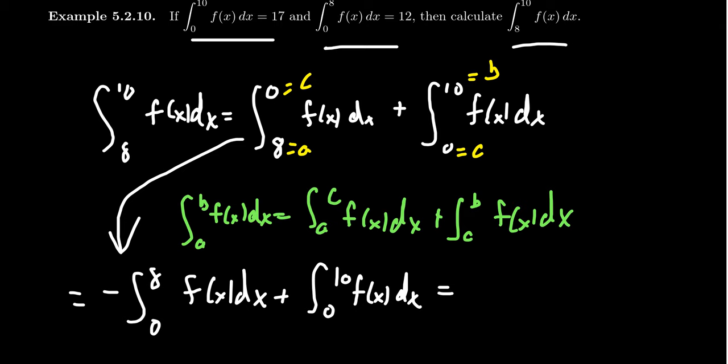Then using the information we know before, the integral from 0 to 8 of f of x was 12, so we get negative 12. And then we add to that the integral from 0 to 10 of f of x, which is 17.